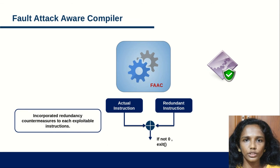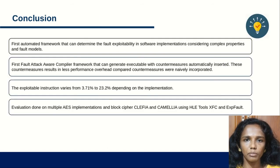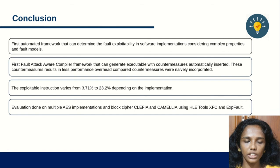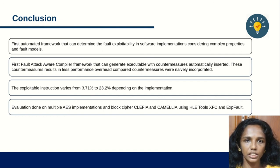In conclusion, we have developed an automated framework that determines exploitable locations in software implementations of block ciphers, and we have developed the first automated fault-attack-aware compiler framework that incorporates countermeasures automatically. The exploitable instructions vary and depend on the implementation. We have done evaluations on different AES implementations and other ciphers. Thank you for your attention; please let us know if you have any queries.